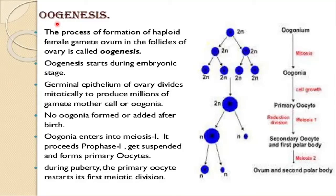Hello. Today we are going to study what is oogenesis. This is the process of formation of haploid female gamete ovum in the follicles of the ovary, and oogenesis starts during the embryonic stage.